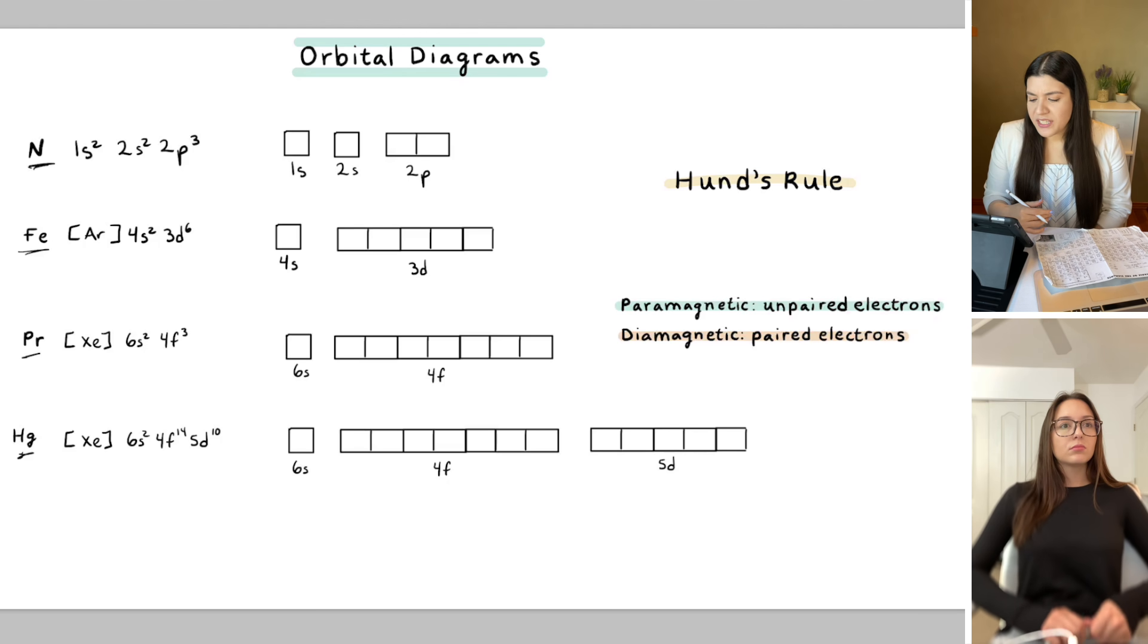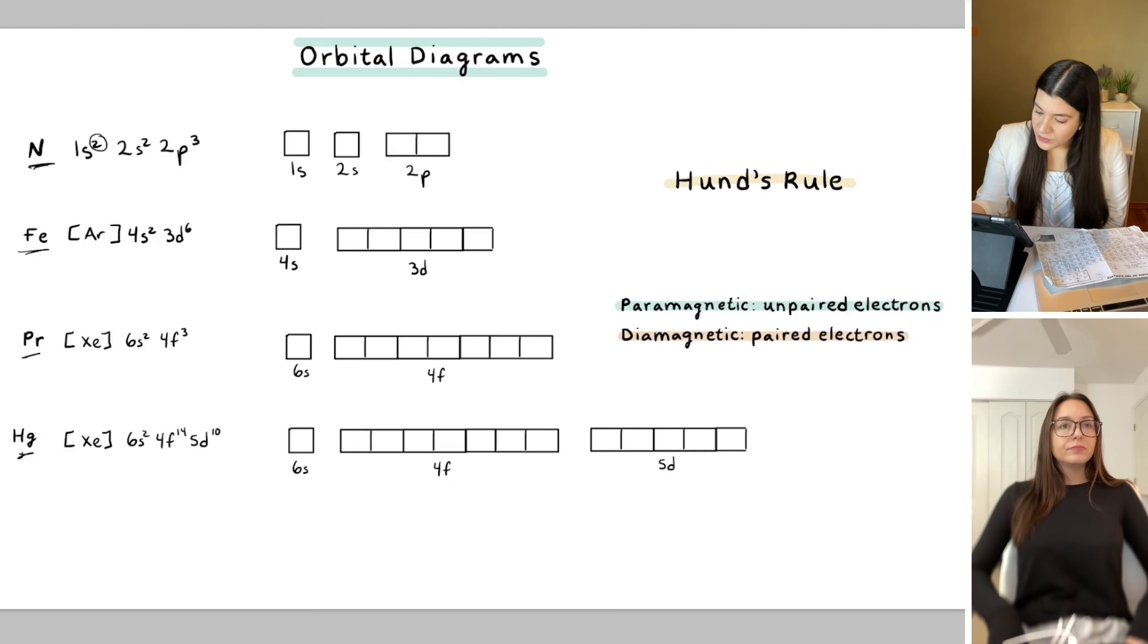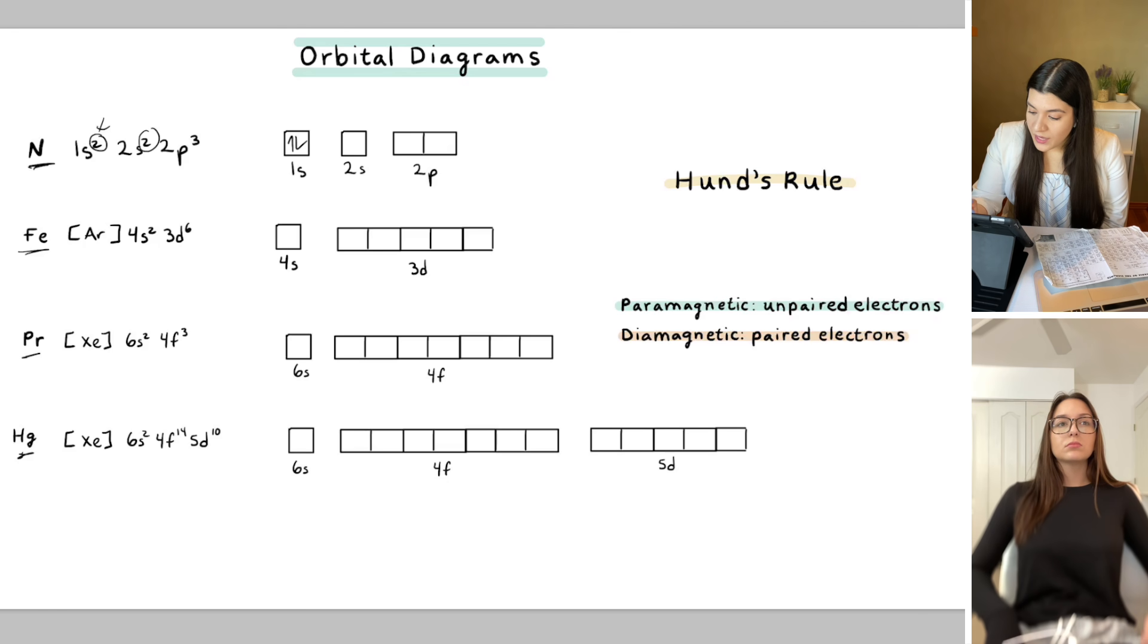So for nitrogen, I would just write in the electrons here. So this is 1s2. This two tells me there are two electrons there. So I'm going to, and actually, hold on, let me explain this a little bit more. I would fill this completely because this is completely full. And then same thing here with 2s.